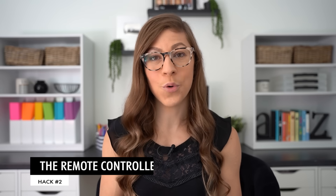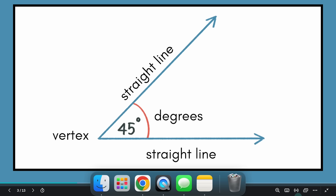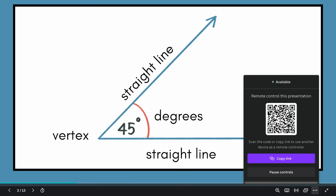Hack number two is the remote controller, which allows you to control your slides from your phone or a tablet. To access it, bring up the bottom bar while presenting, click the three dots (More button), and click 'Share Remote Control.' It will say 'Available' and give you a QR code or a link. You can scan the QR code with your phone's camera or copy and paste the link to another device.